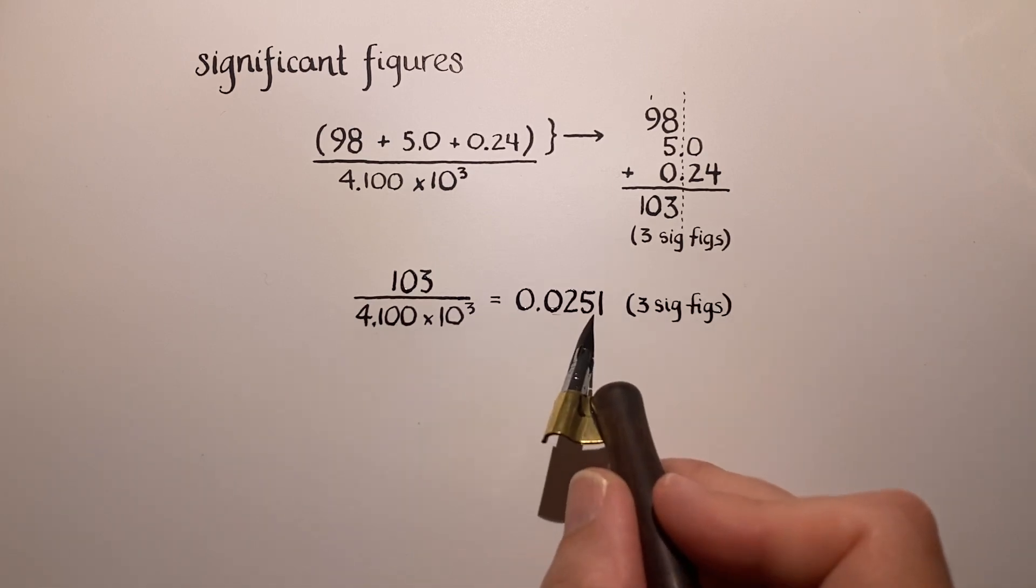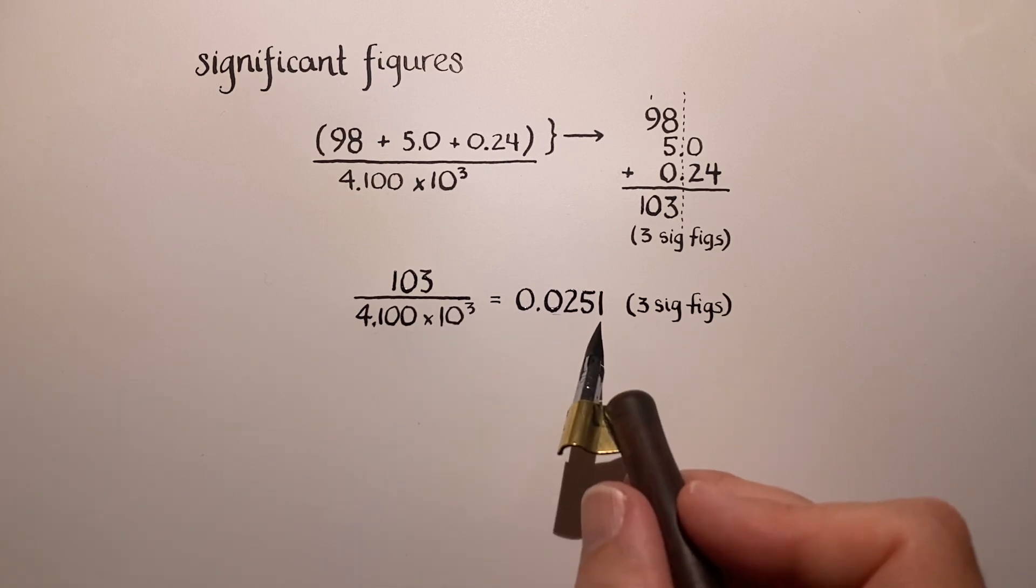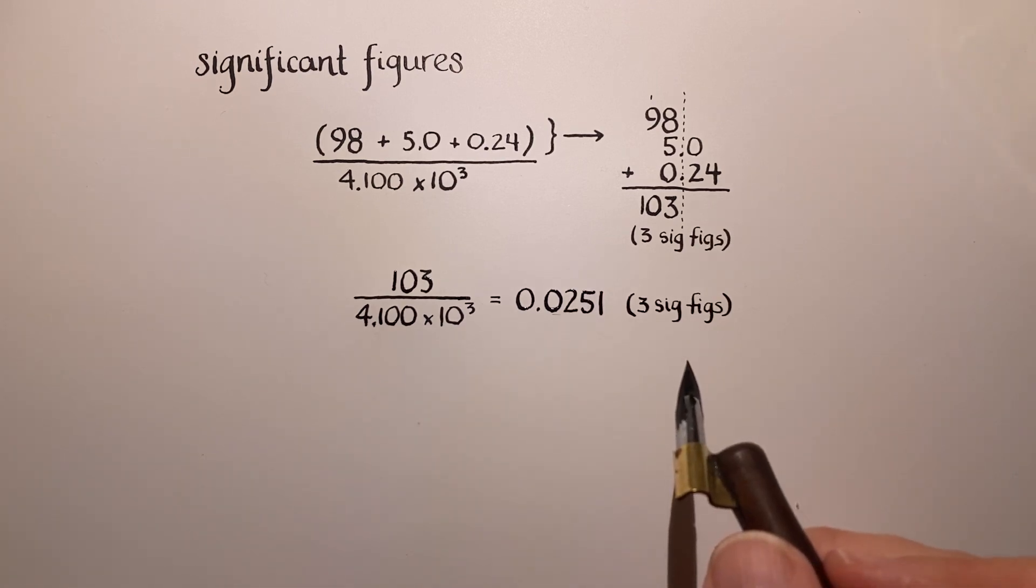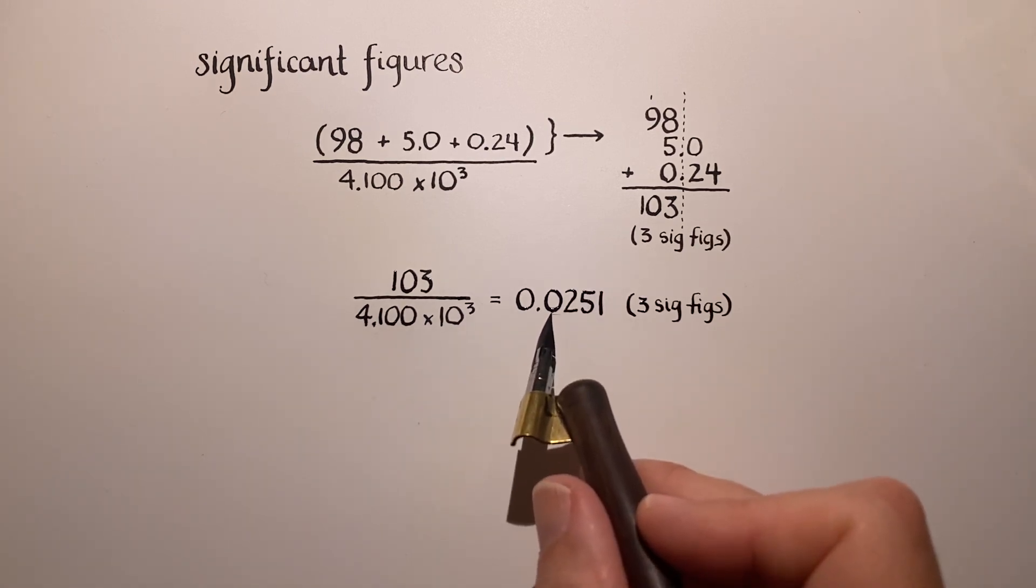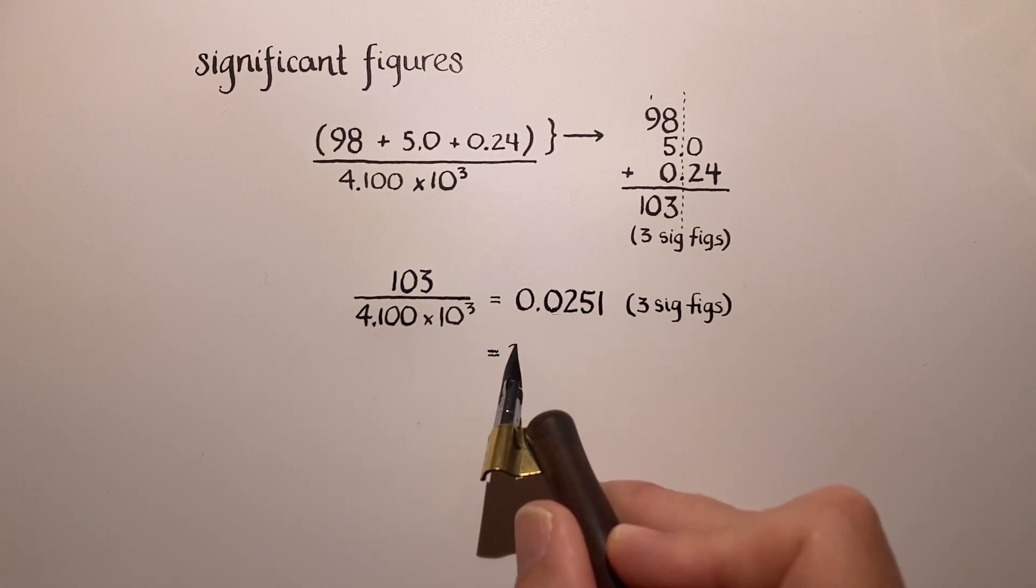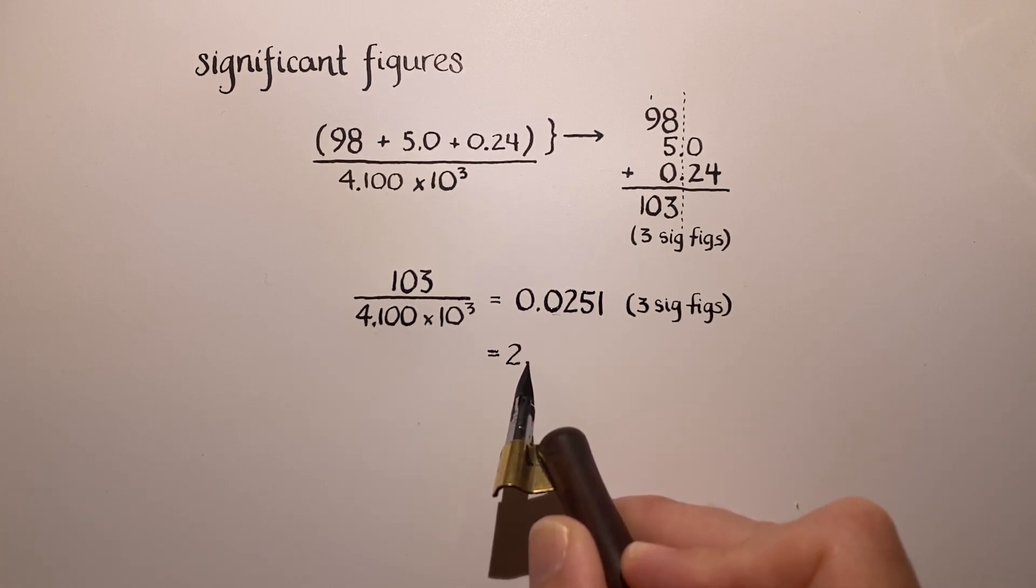And I want to show this to you again, writing this value in scientific notation, so that you can really see and believe me. Yes, this is three significant figures, and no, that 0 there is not significant. Because if we rewrote this using scientific notation, we would need to write it like this: